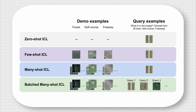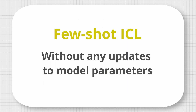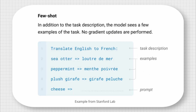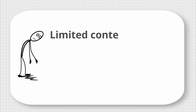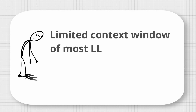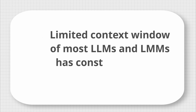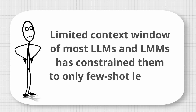Up until now, in-context learning enabled LLMs to learn from few shots without any updates to model parameters, and therefore improved specialization to new tasks without any further model training. Recently, experiments have been conducted on large multimodal models, or LMMs, for the effects of in-context learning, especially on out-of-domain or out-of-distribution tasks. The issue so far has been the limited context window of most LLMs and LMMs, which constrained them to only few-shot learning.